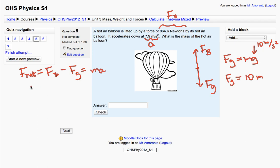So what that would look like is 864.6 minus 10m equals - since it's down, it's going to be negative 7.9 - so negative 7.9 times m.